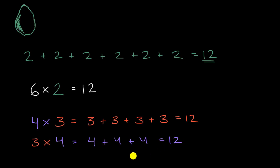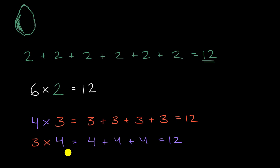So this is interesting. At least for these two examples, I got to the same thing. Four times three got me the same result as three times four. Interesting — I wonder if that's always true. But anyway, the big picture from this video is that you can view multiplication as repeated addition.